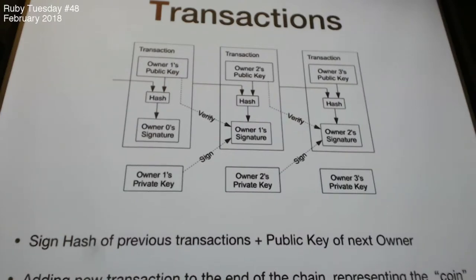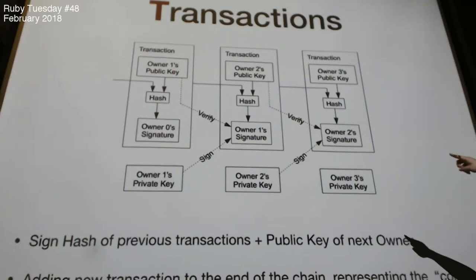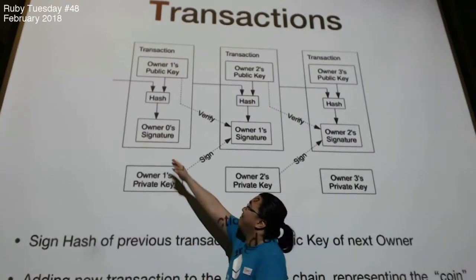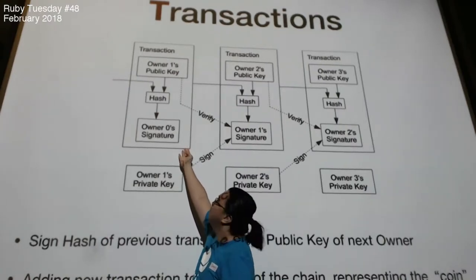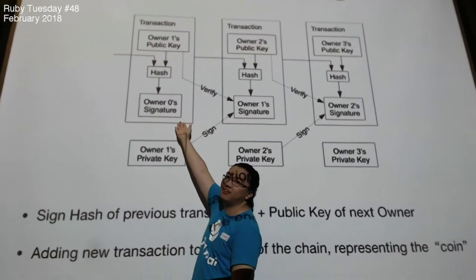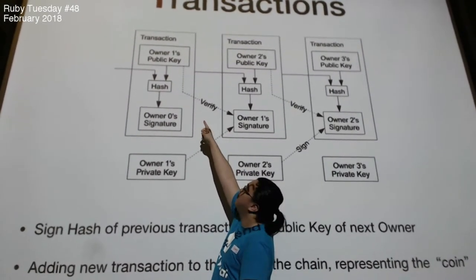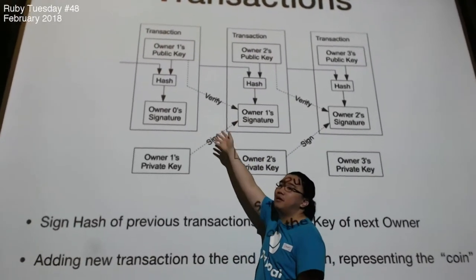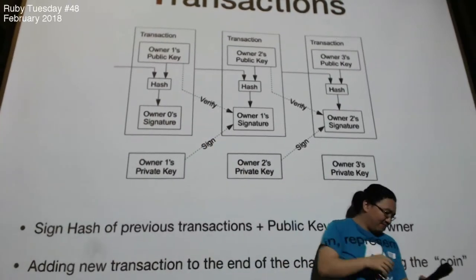What happens is when you send a transaction to other people you have to create a hash from the previous transaction of your wallet plus the public key of the people you are going to send to, and sign it with your own signature. For example, this is a transaction that sends some money from owner 0 to owner 1. That's why owner 0 will sign the transaction with his signature with the receiver's public key, and therefore the receiver can verify that this transaction was created by owner 0.